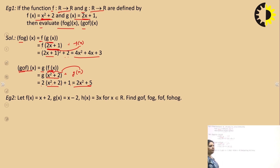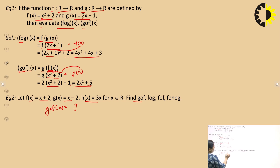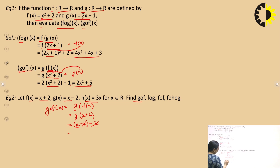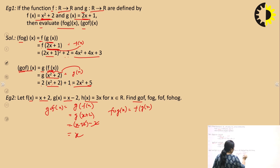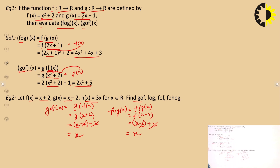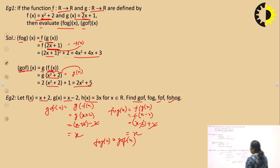Similarly, if F(x) = x + 2, G(x) = x - 2, and H(x) = 3x, we can compute gof(x) = G(F(x)) = (x + 2) - 2 = x. You can also compute F of F and H of G similarly. Thank you, this is all about functions. We will meet in the next lecture.